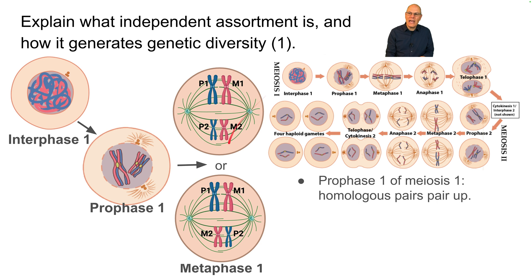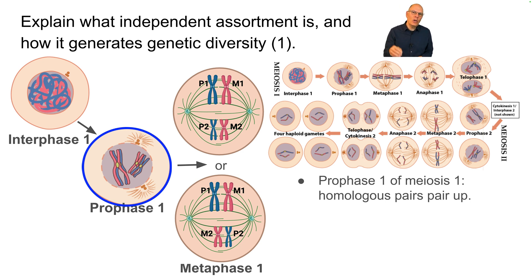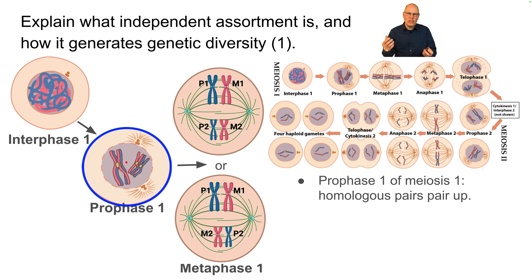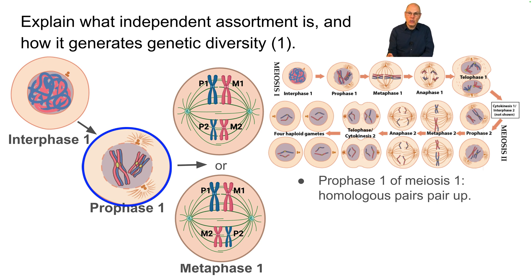What happens is that during prophase one, homologous pairs pair up. It's quite poignant and extraordinary. In the adult organism undergoing meiosis, the chromosomal parents wind up finding each other. The father's chromosome number one and the mother's chromosome number one find one another and actually embrace. Chromosome two does that, chromosome three does that — all those chromosomes find one another and embrace.